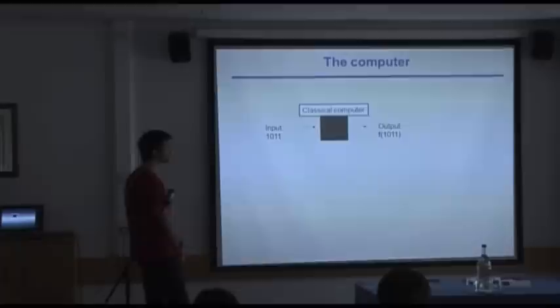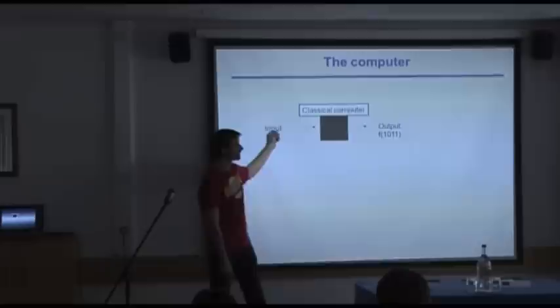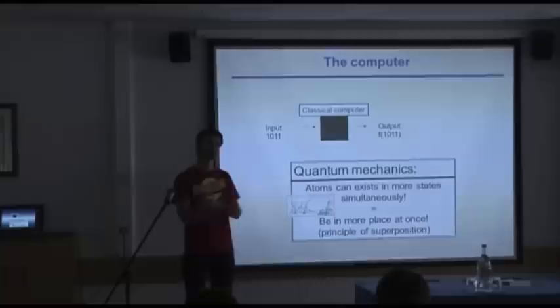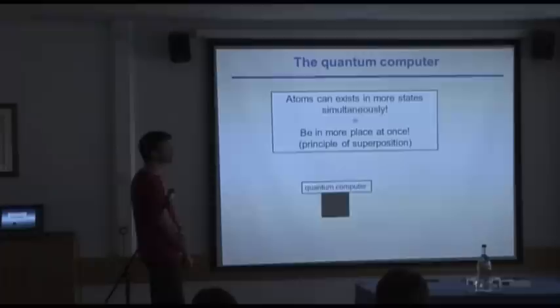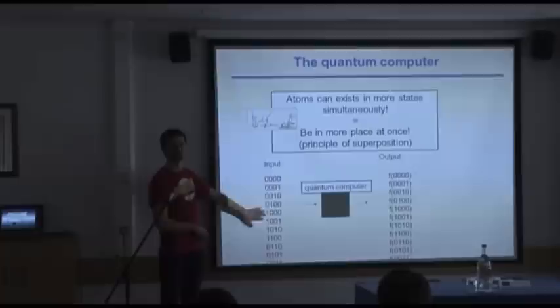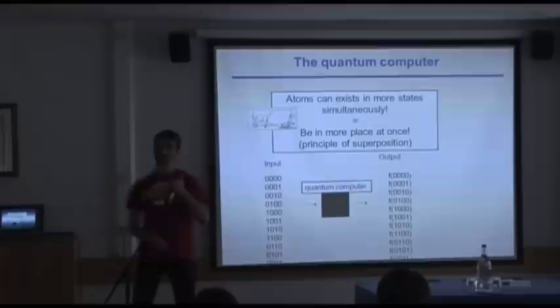How can we take advantage of that? A classical computer is a black box: zeros and ones come in and a function is calculated. In quantum mechanics — think of Schrödinger's cat — the quantum system can exist in different states at once. A qubit can be in both zero and one at the same time. If we have four qubits we have 16 different states we can represent simultaneously and the black box calculates 16 different outputs. If we had 300 qubits, we would calculate more values in a single step than there are atoms in the whole universe.